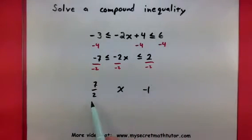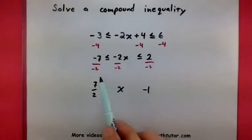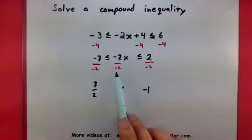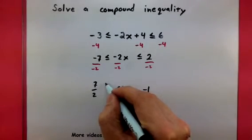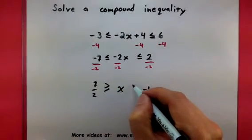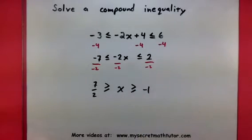Now notice, negative one is smaller than seven halves. And I divided by something negative. That's your clue that these symbols should switch. There we go.